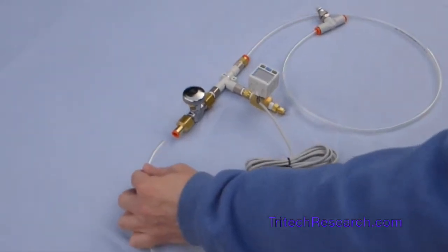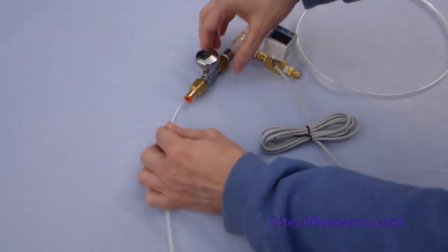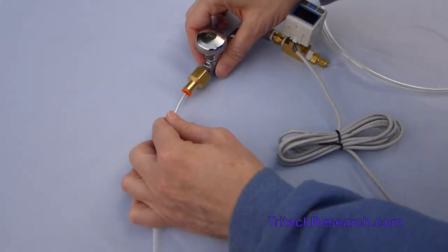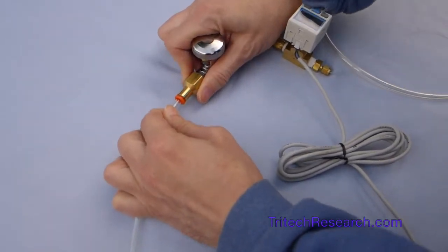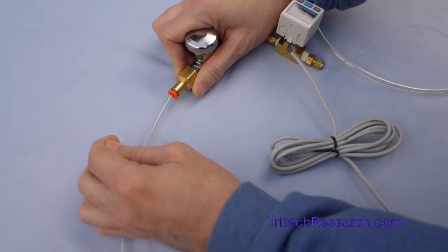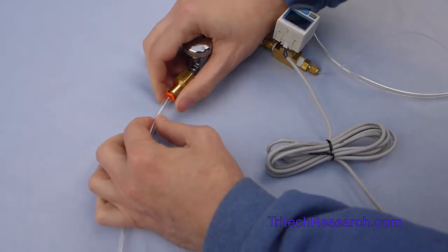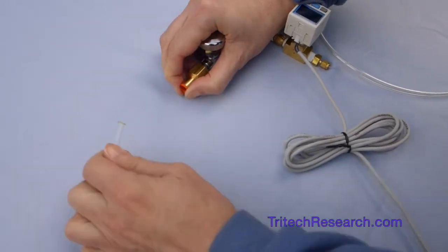So first we'll attach a positive pressure source into this quick connect. You push it in a little ways and then you'll feel some resistance and then you push it in farther, and when you try to pull it out it's locked into place. If you ever need to remove it you hold the ring in and pull it out.